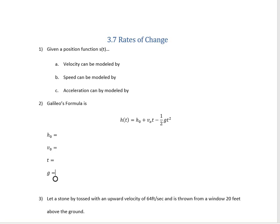If you're given a position function — let's call it s of t — then the velocity can be modeled by the derivative. So s of t tells us where a function is, and the velocity is going to tell us where it's going. The derivative of the position function gives us the velocity, which is distance over time.